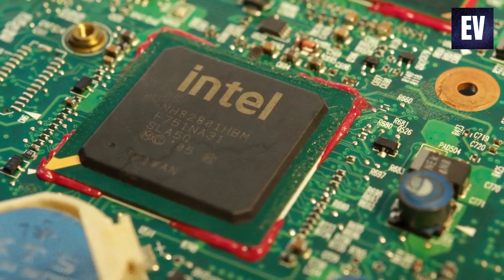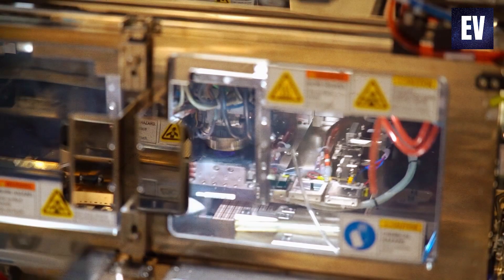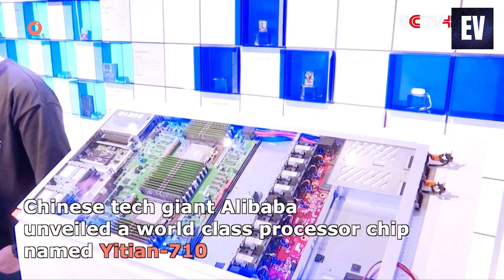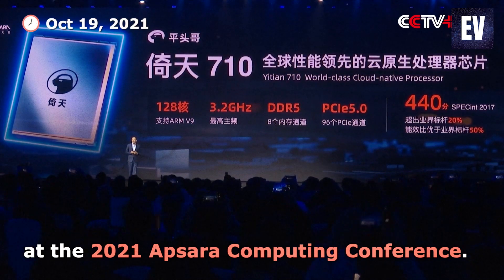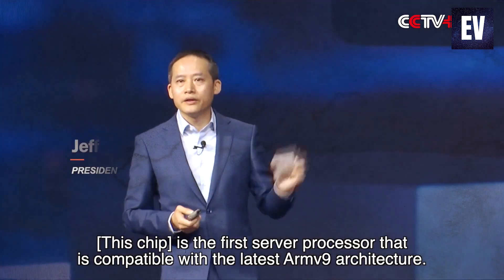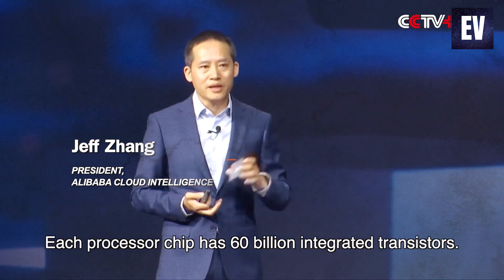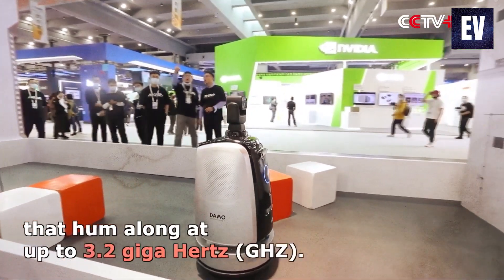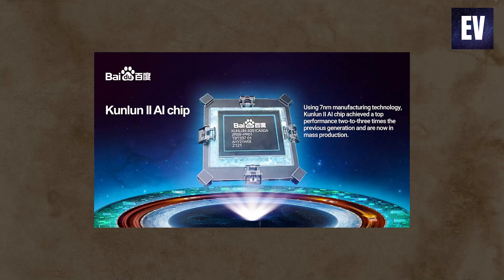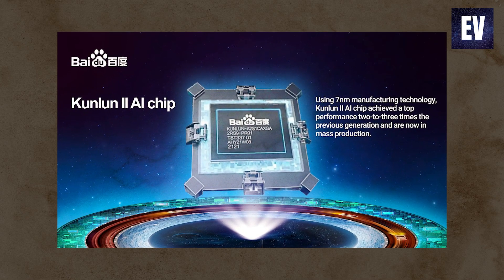Take a deeper look at the specifications of the silicon being developed, and you'll notice China's reliance on foreign firms. Consider the new Yitian 710 chip from Alibaba. This is based on the architecture developed by the British semiconductor company Arm. It will also be constructed using the so-called 5 nanometer process, which is currently the most sophisticated semiconductor technology available.